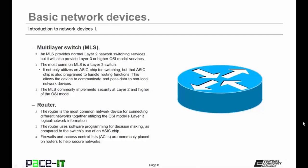Then we have the router. The router is the most common network device for connecting different networks together, utilizing the OSI model's Layer 3 logical network information. Unlike the switch, which uses an ASIC chip, the router uses software programming for decision making. Firewalls and access control lists are commonly placed on routers to help secure networks.